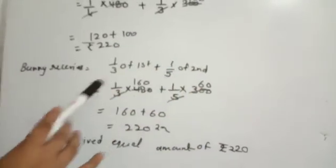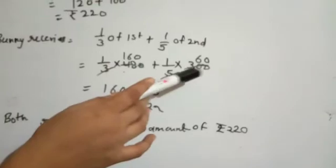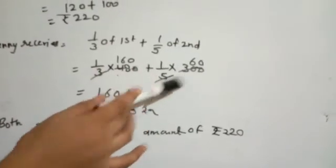Bini receives 1/3 of the first bundle and 1/5 of the second bundle. That's 1/3 of ₹480 plus 1/5 times ₹300.